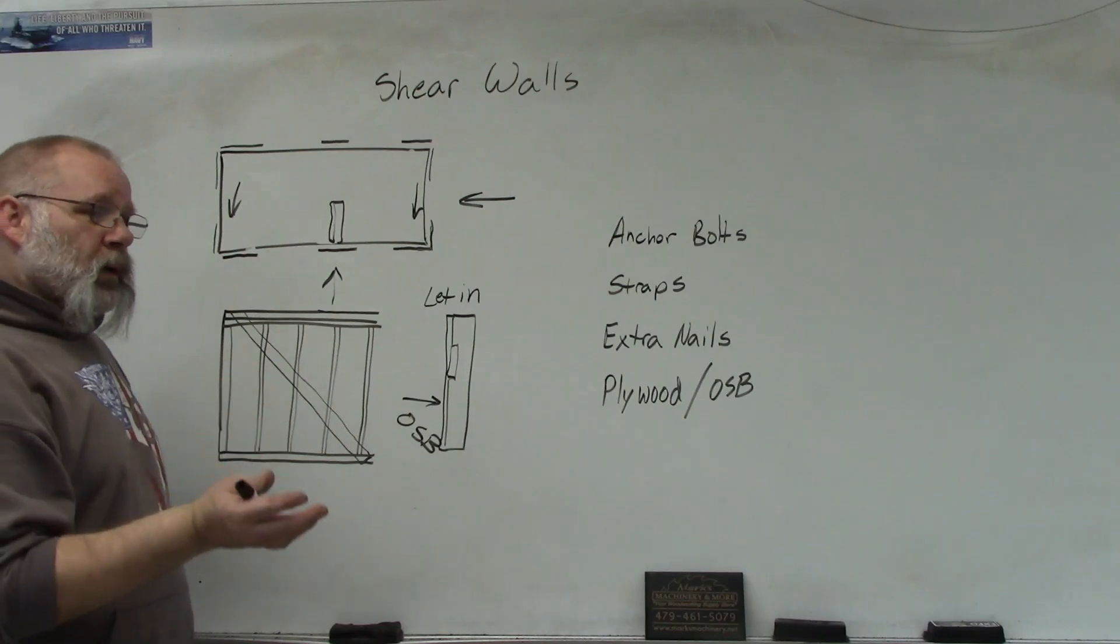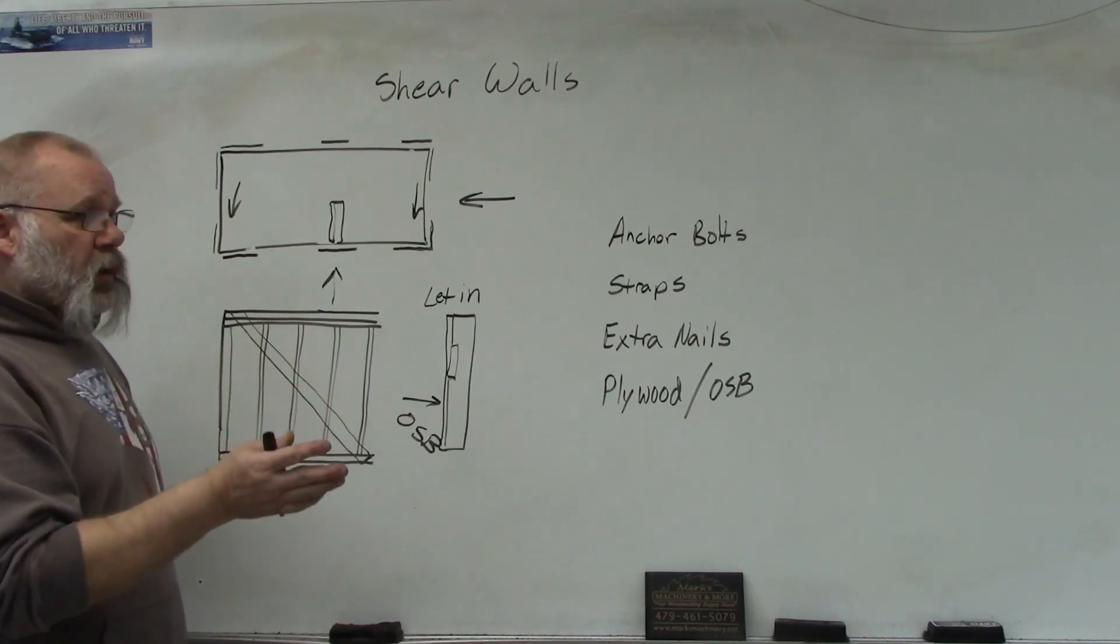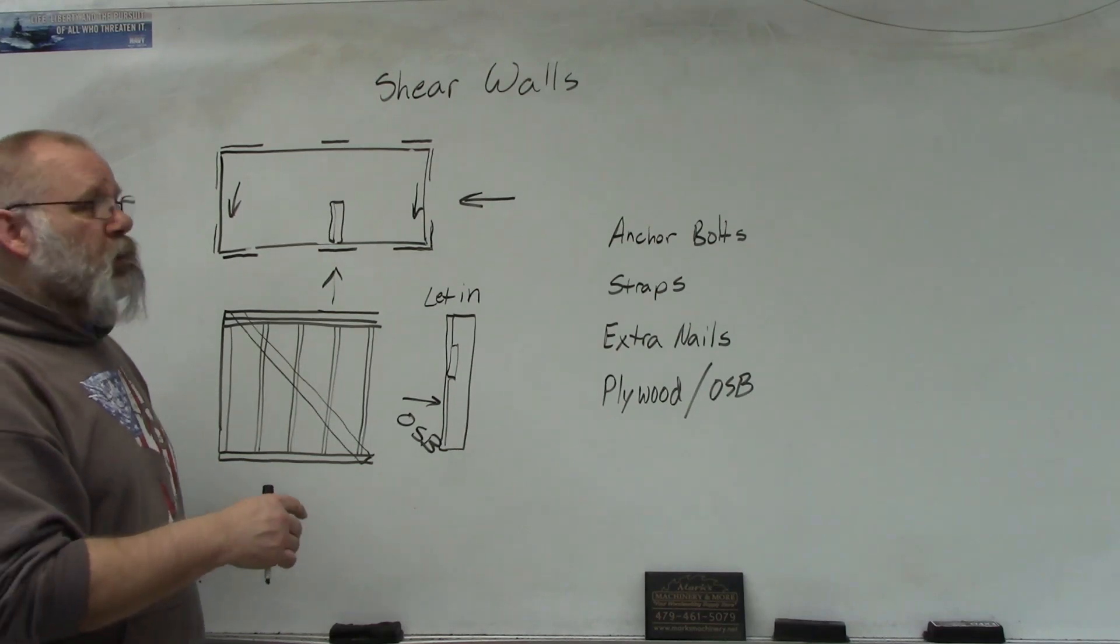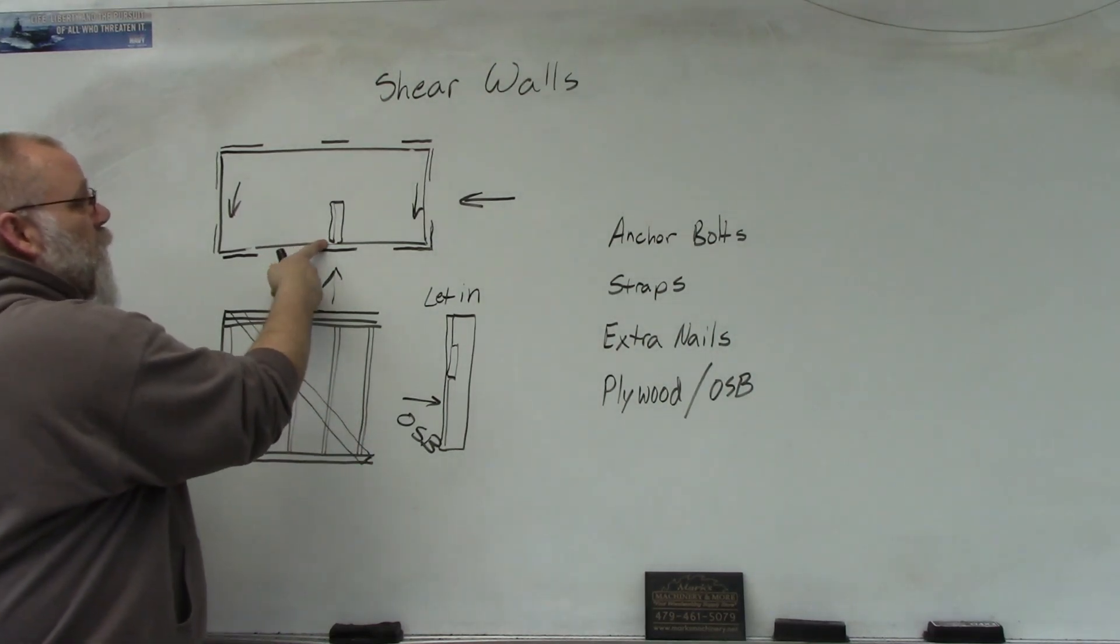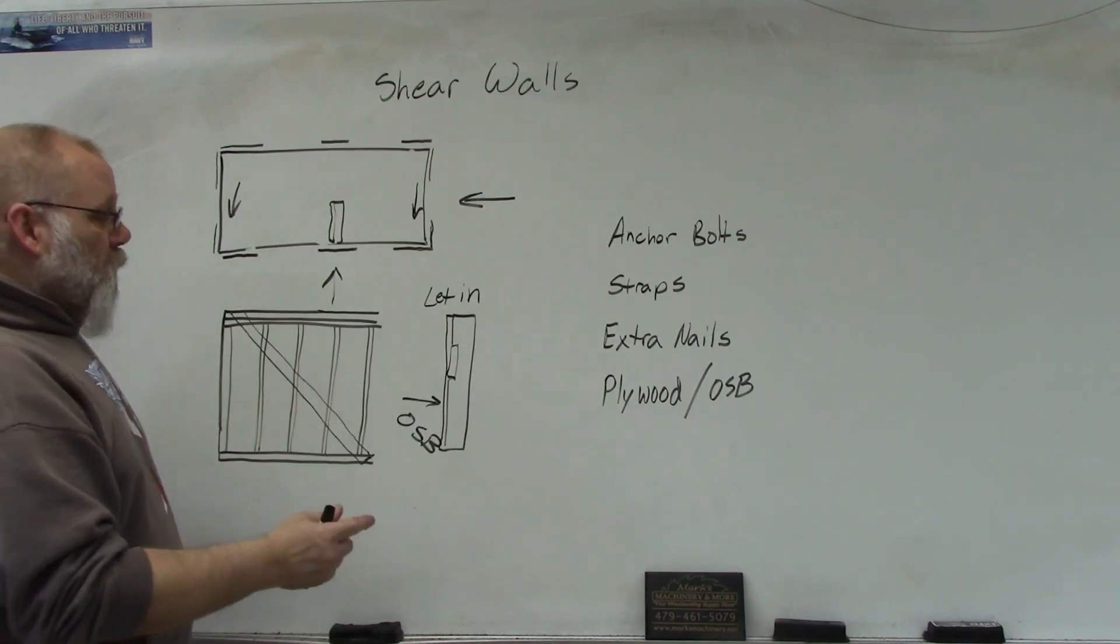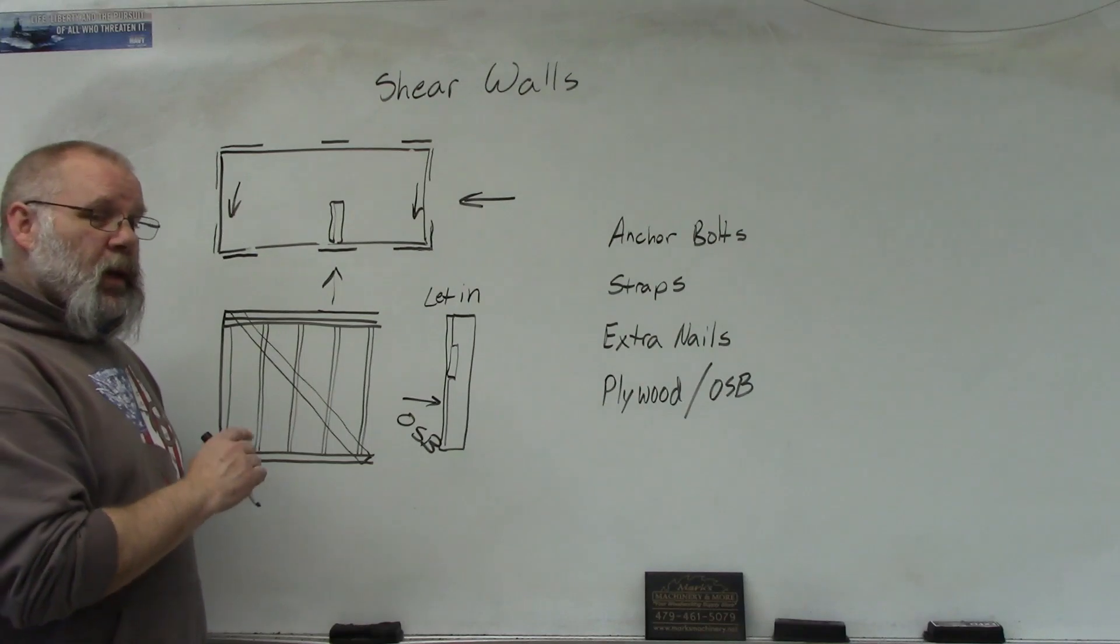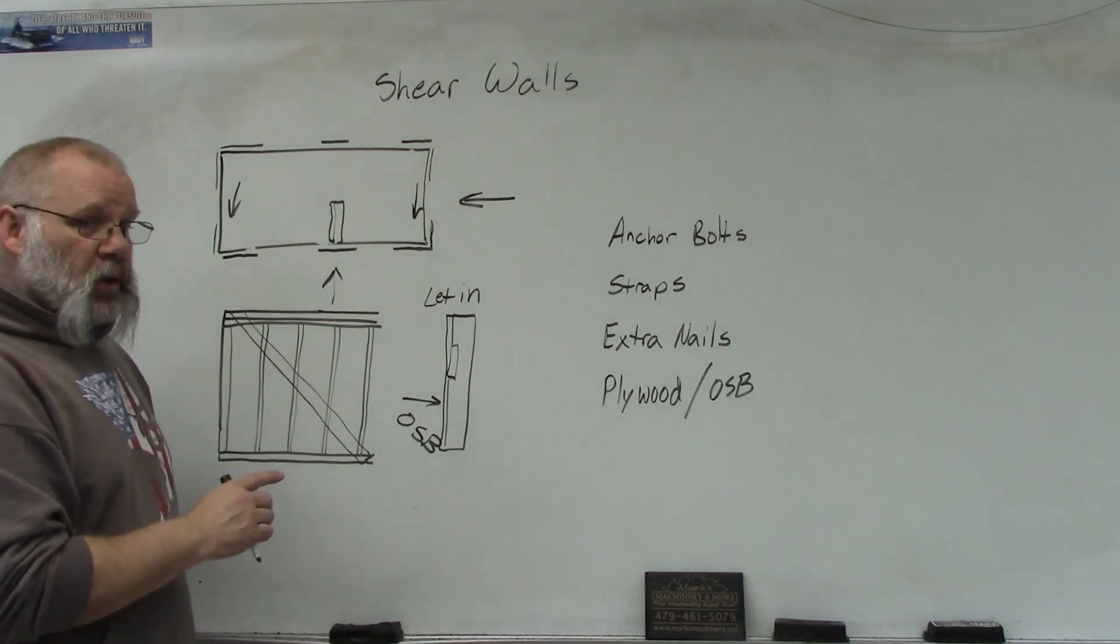So if you're remodeling and you start tearing off your drywall and it's got OSB behind it, you can pretty much guarantee that's probably going to be a shear wall. If you tear all the drywall off and there's a let-in brace in the wall, then it's probably going to be a shear wall.